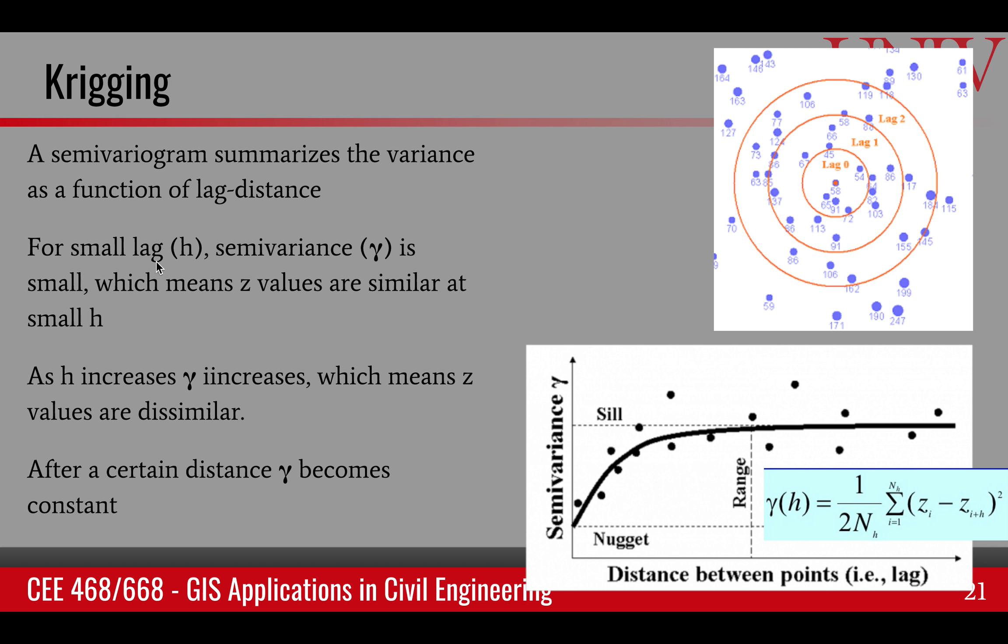For small lag h, the semi-variance is small, which we can see in this graph. So this is small lag, so semi-variance is small. But as we go away, the semi-variance increases. So as h increases, the semi-variance increases. I want to point out the semi-variance is basically just half of the variance. You know what variance is as a square of standard deviation. Just divide it by 2 to get semi-variance.